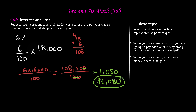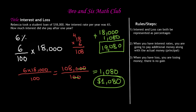So how much was Rebecca's total? We find that by adding: eighteen thousand plus one thousand eighty gives us nineteen thousand eighty dollars. At the end of the year, Rebecca is really paying nineteen thousand eighty dollars because she took that loan of eighteen thousand dollars at a six percent interest rate. That is how we calculate interest.